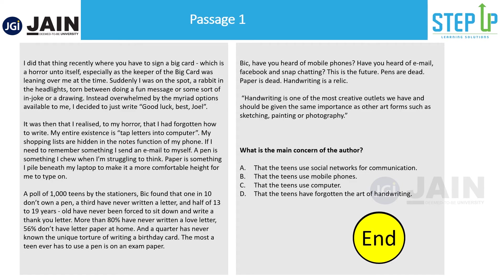The question asks: what is the main concern of the author? This tests your overall understanding of the passage. If you've read carefully, you'll notice what's repetitive and what the author keeps coming back to. In this passage, after the first paragraph you may not have a clear picture yet, but then the author says 'I realized to my horror that I had forgotten how to write,' then mentions his entire existence is on computer and emails, and then references a poll of 1,000 teens by stationers finding they very rarely use a pen.